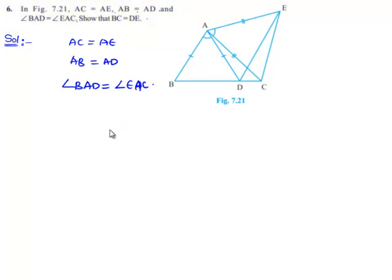To prove that BC is equal to DE, let us consider the triangle ABC and triangle ADE. In this, AB will be equal to AD which is given, and also AC is equal to AE which is also given.